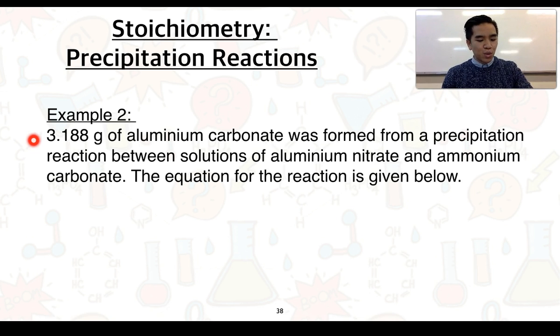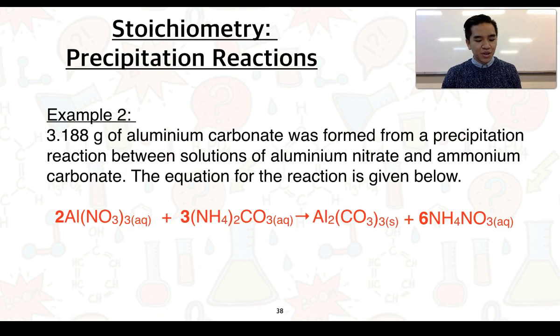In example 2, we have 3.188 grams of aluminium carbonate was formed from a precipitation reaction between solutions of aluminium nitrate and ammonium carbonate. The equation for the reaction is given below. So, here we've got 2Al(NO3)3 plus 3(NH4)2CO3 goes to produce Al2(CO3)3 plus 6NH4NO3.